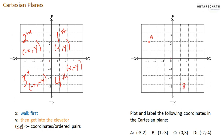C is zero, so I'm at the point of origin already. I'm not going to move, so I'll stay right there, then positive three. One, two, three, and that is C.